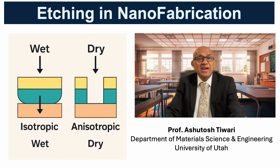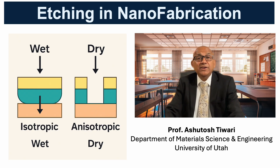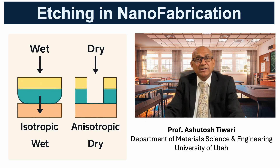After pattern definition, etching transfers those patterns into the underlying material. Etching selectively removes exposed regions while protected areas remain intact. Two main categories exist: wet etching using liquid chemical solutions, and dry etching using plasmas or energetic ions. The critical attributes are selectivity — preferentially removing one material over another — and directionality, controlling whether the process is isotropic or anisotropic.